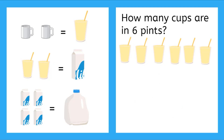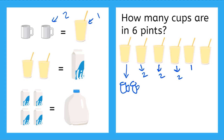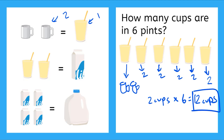How many cups are in six pints? I need to find my conversion factor with cups and pints, and it says there are two cups in every one pint. So each pint is equal to two cups, two cups, two cups, all the way down the line. I can count the cups or do a quick multiplication: two cups times six pints equals twelve cups. So there are twelve cups in six pints.